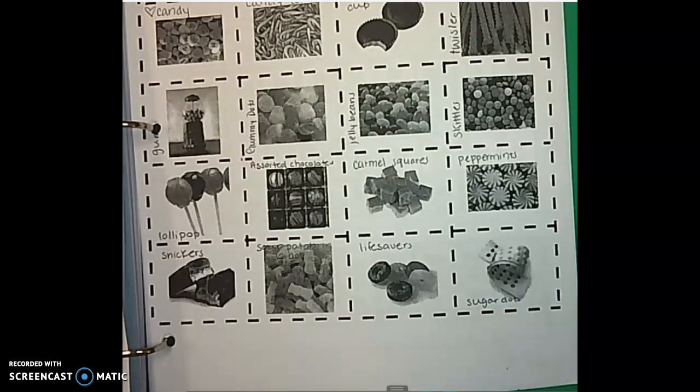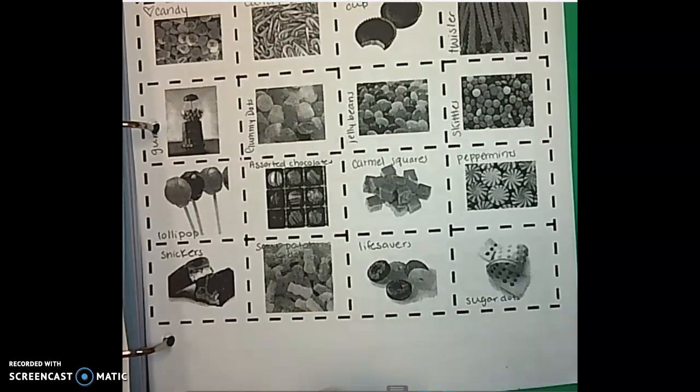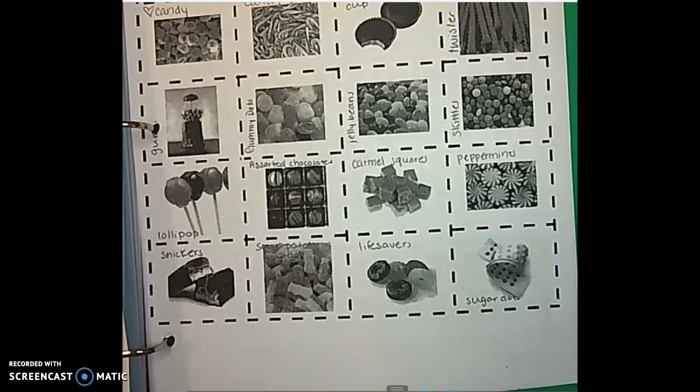So what you're going to do is cut on the dotted line, and you have all of these different types of candies and you're going to put them into categories. You need to have no less than four categories and no more than seven categories.